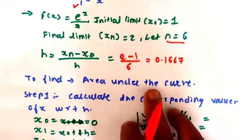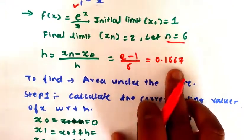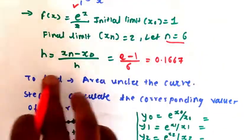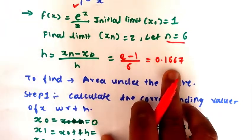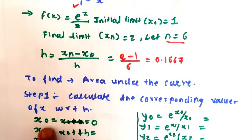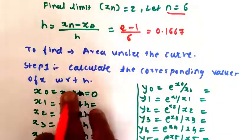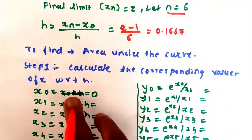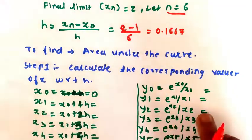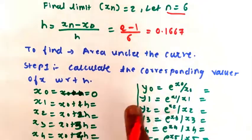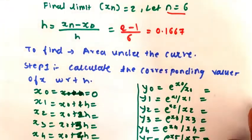So the value of h is 0.1667. With the help of this step size h, we have to find out the value of x. We have to calculate the corresponding value of x with respect to h, and then find out the corresponding value of y with respect to x.